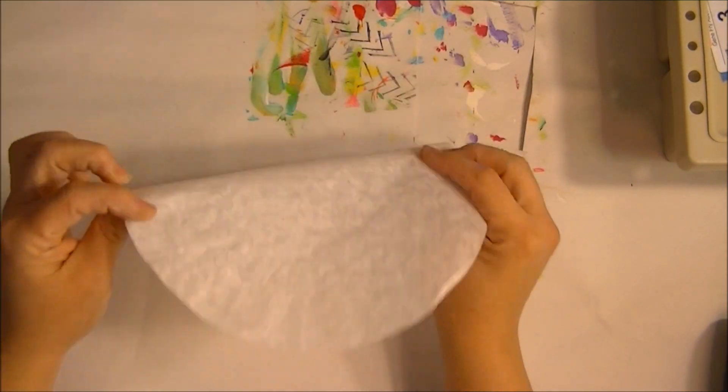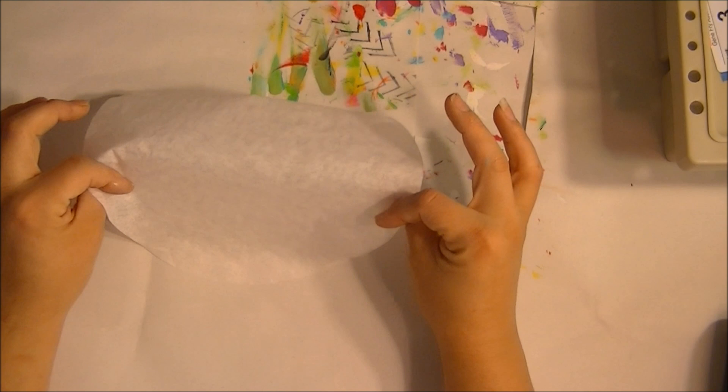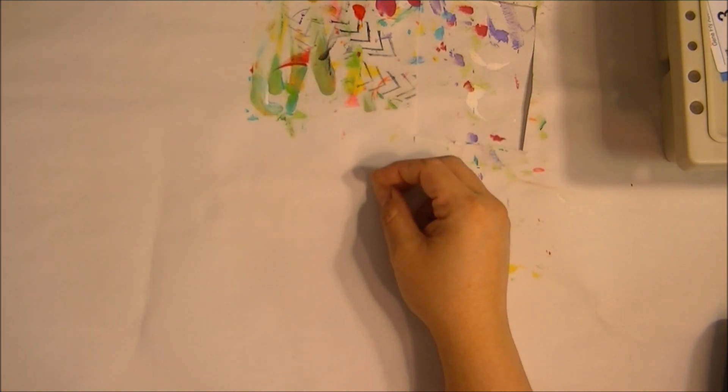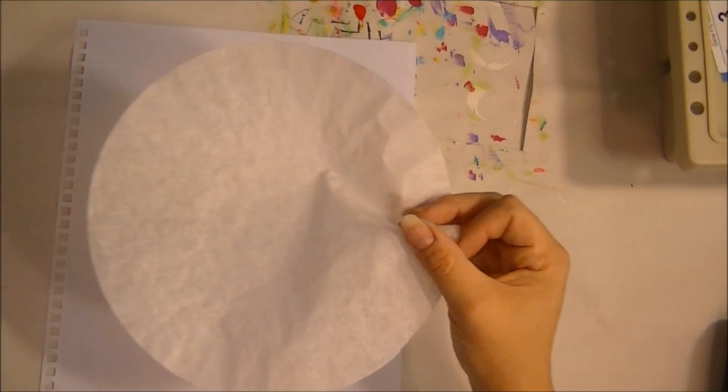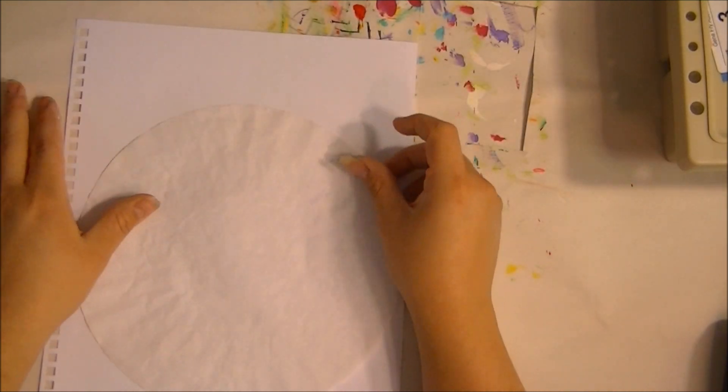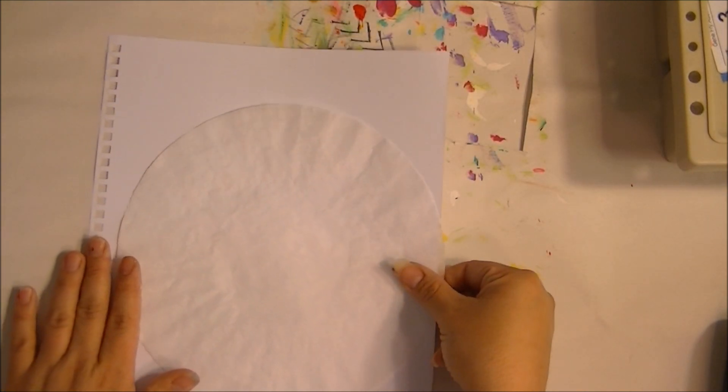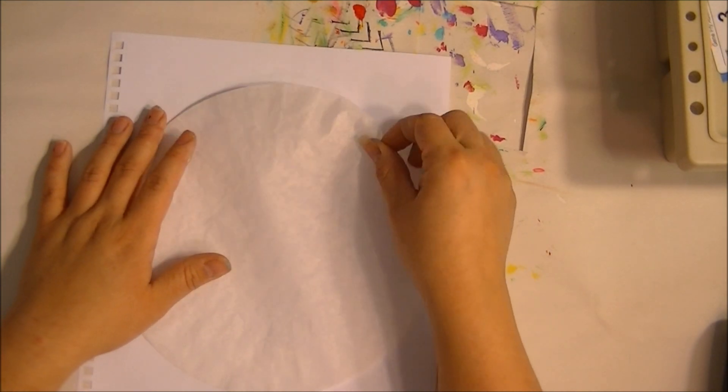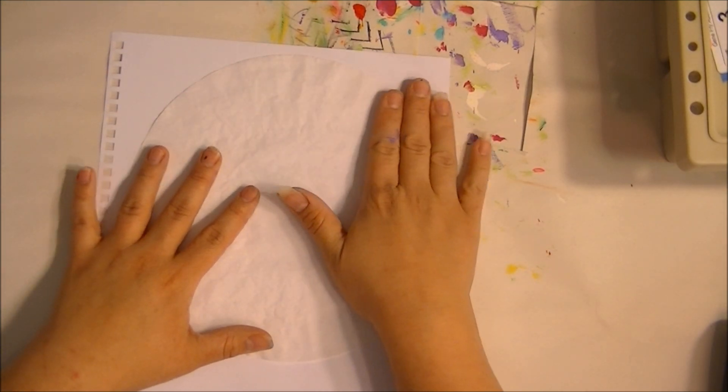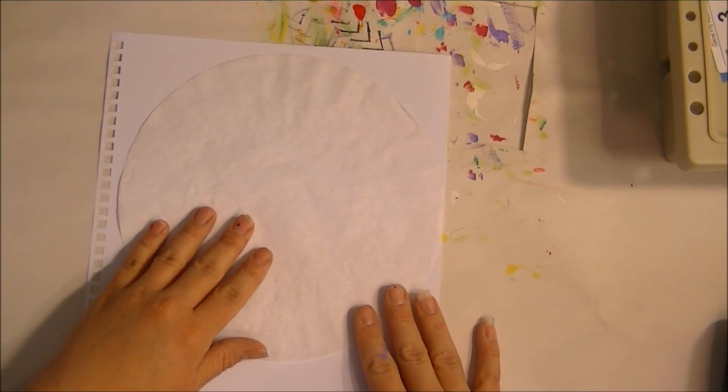Now this is a flat coffee filter. I'm just going to tape it to this. Just like we did with my tutorial on printing on deli paper, we're going to do the same thing with this. We're going to have to tape it down so the printer will be able to feed it through.